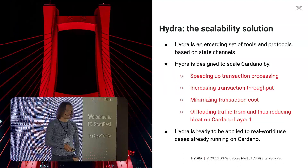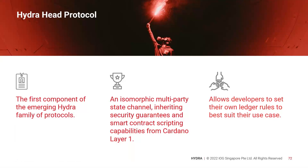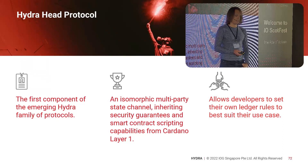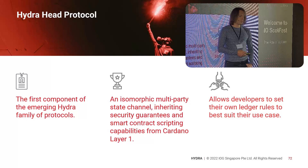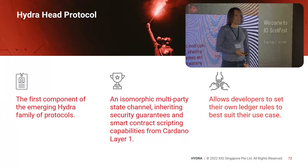Hydra is ready to start applying to existing applications. We are starting with the Hydra Head protocol, which is the first component of the emerging set of scalability protocols as part of the Hydra family. It is in essence an isomorphic multi-party state channel. Isomorphic means that Hydra uses the same data format for representing transactions as is used in the Cardano layer one, including transactions with scripts. This means developers can use the same tools and techniques they would use to develop applications in layer one.